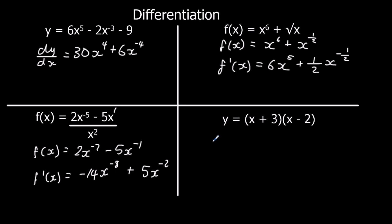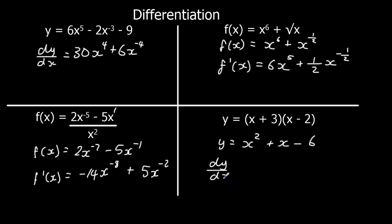Over here we need to expand the brackets first. That gives us x squared minus 2x plus 3x, so plus x, minus 6. Then dy/dx — the same process again: 2x, and think of this as 1x, which will go to just 1.